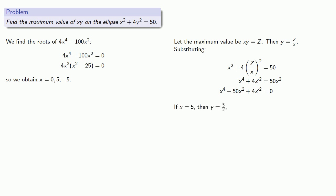If x equals 5, then we find that y is equal to 5 halves, so z is 25 fourths.